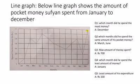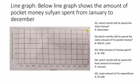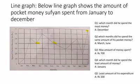Question number two: which months did he spend the same amount of pocket money? We have to notice the months in which he spent the same amount, and those months are March and June. Question number three: what is the maximum amount of money spent? The maximum amount spent is 700 rupees, which was in December.